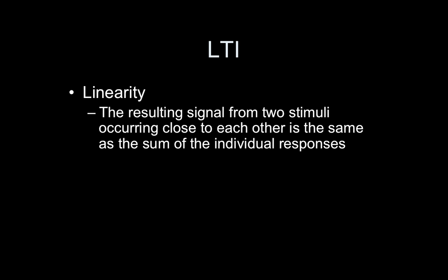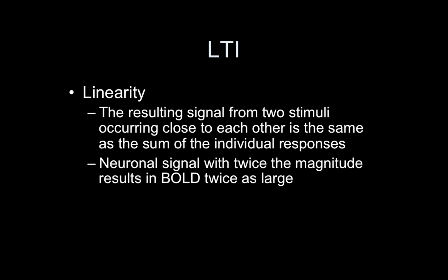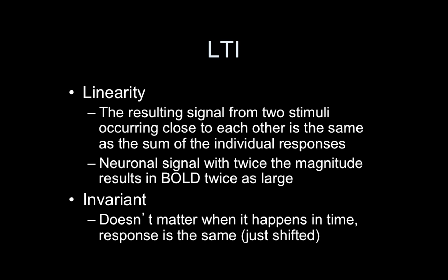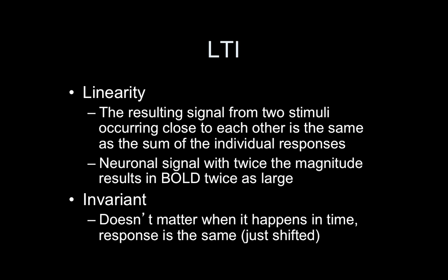So what does linear time invariant mean? LTI. So linearity means the resulting signal from two stimuli occurring close to each other is the same as the sum of the individual responses. I'll show an illustration in a second. Also means the neuronal signal with twice the magnitude results in a BOLD signal that's twice as large. So this is true within reason. Obviously if you think of maybe a visual stimulus, you make the contrast twice as big, that could increase your BOLD signal by twofold. But obviously if you make it a hundred times larger, the BOLD signal won't increase a hundred times, or else blood would shoot out the back of your head or something. So within reason, this holds. Invariant means it doesn't matter when it happens in time, the response is just shifted.